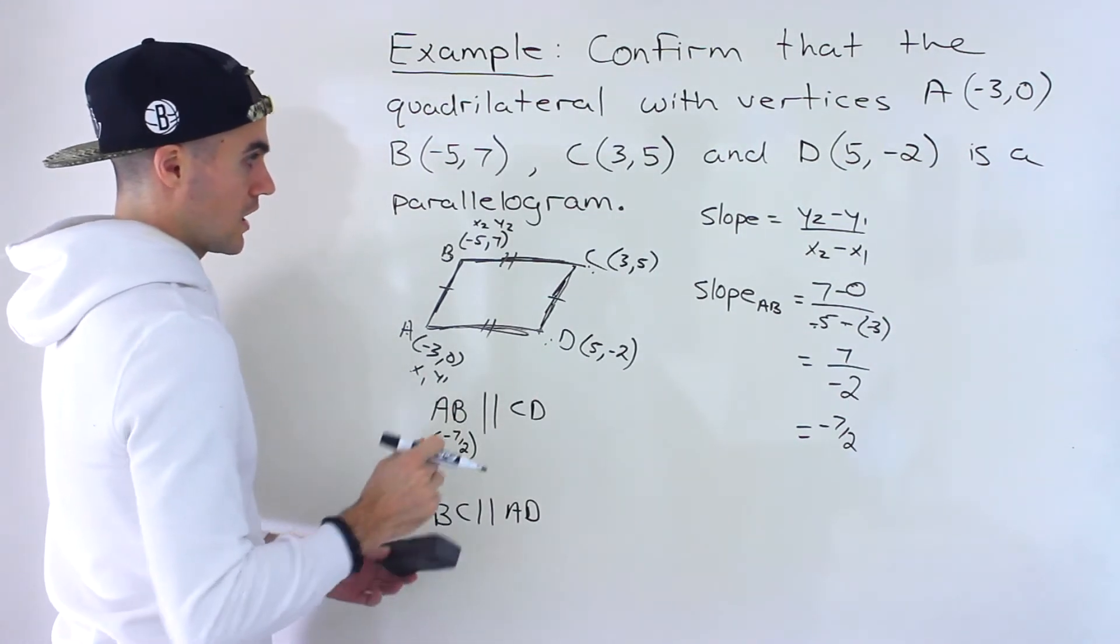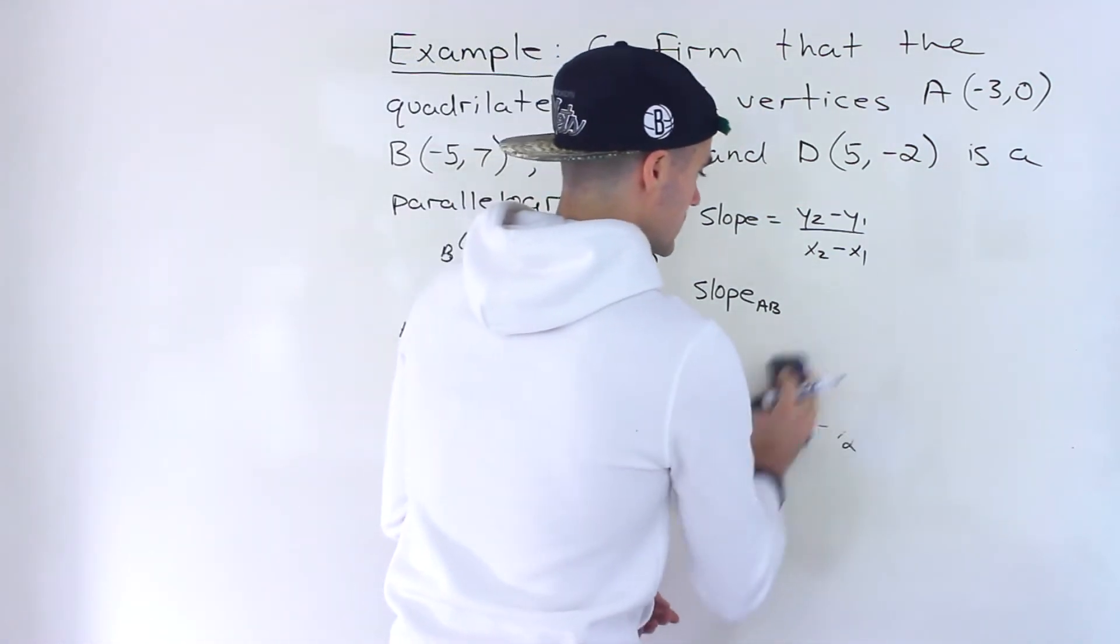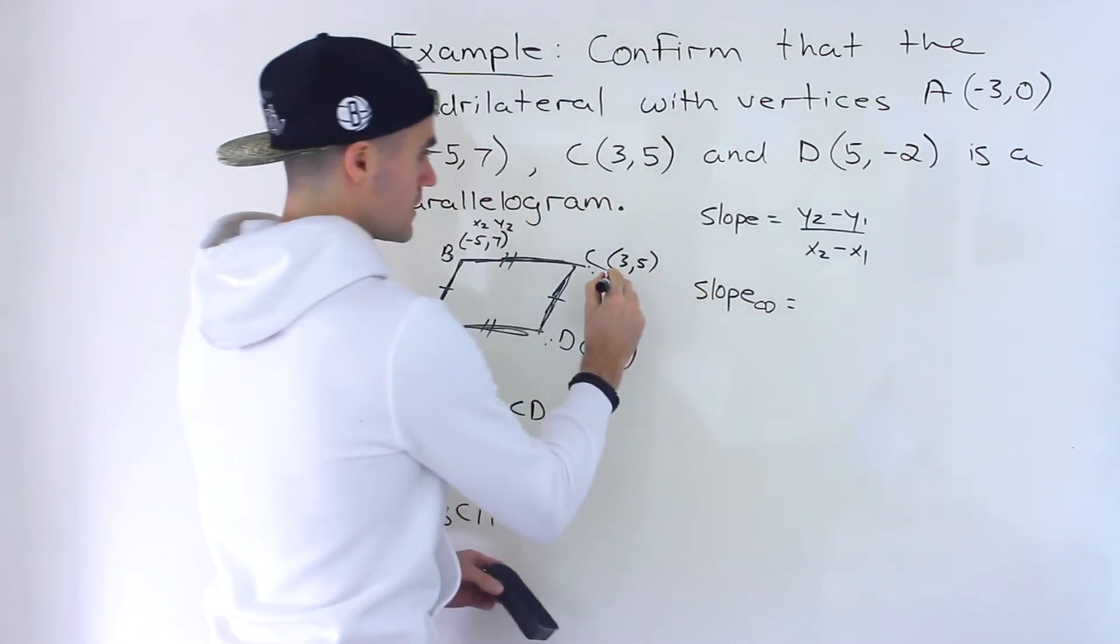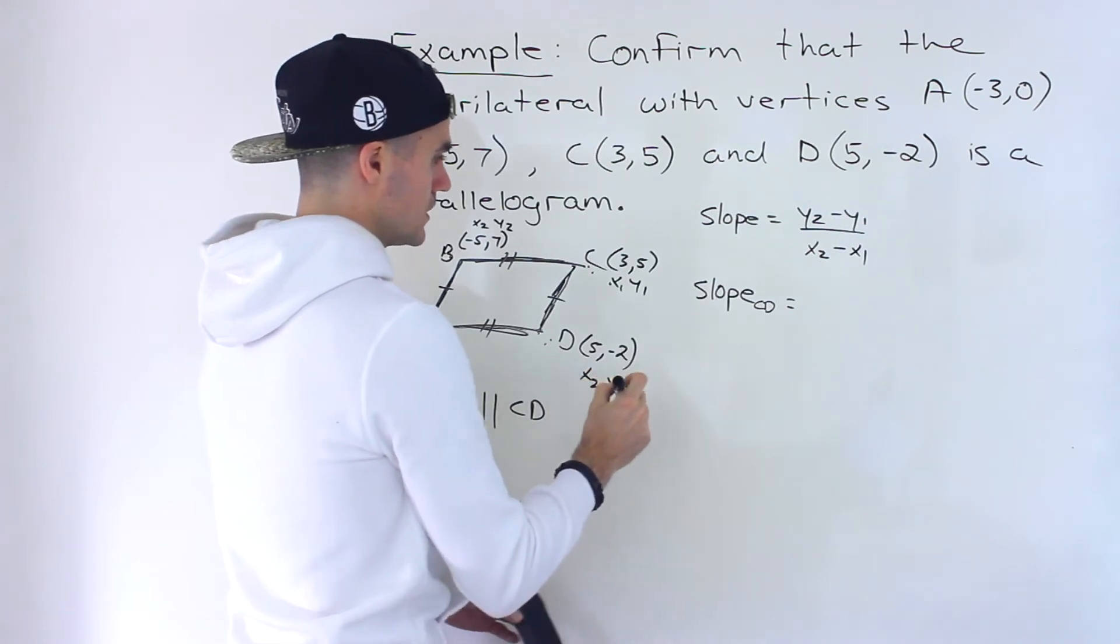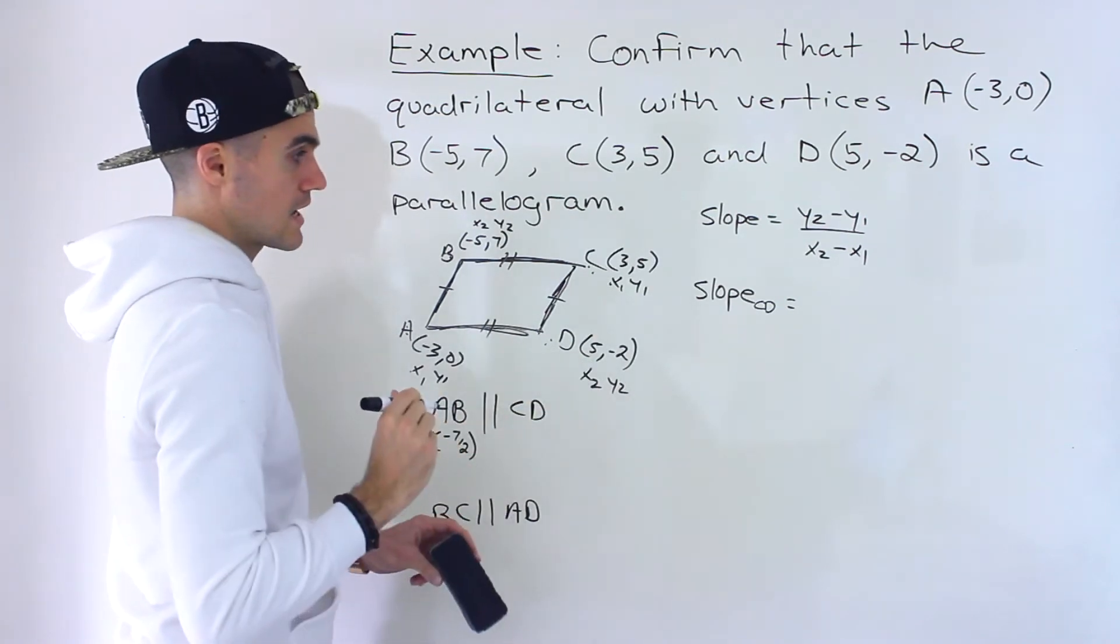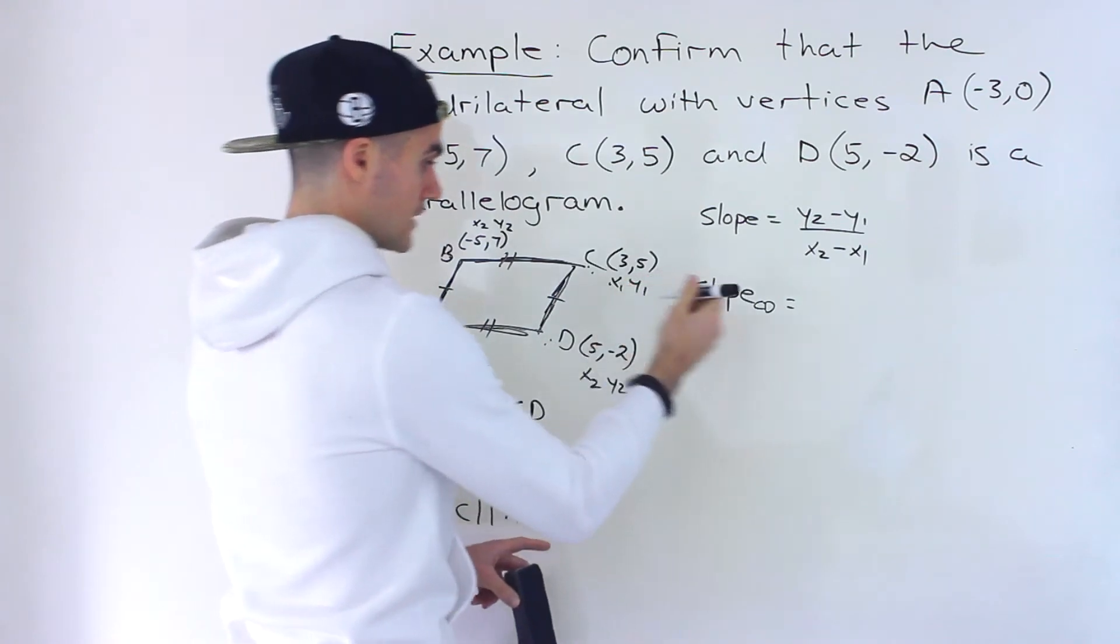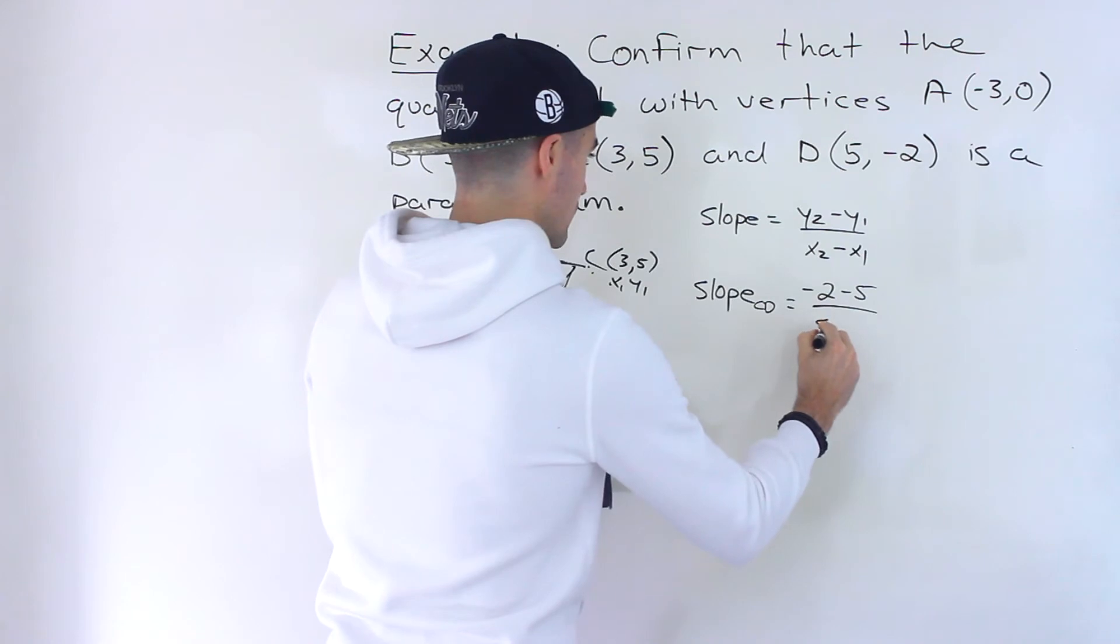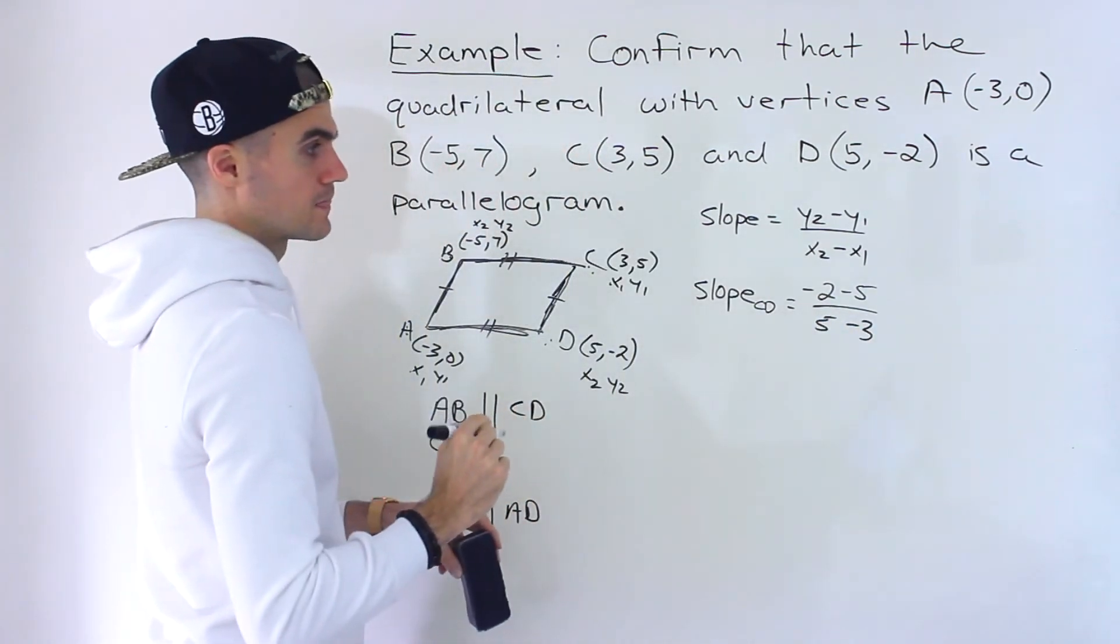Now let's find the slope of C and D. So let's label these points. This would be X1, Y1, X2, Y2. It doesn't matter. You could label this X2, Y2, this X1, Y1. You'll get the same result. So we'll have Y2 minus Y1. So we'll have -2 minus 5 over 5 minus 3 like that.